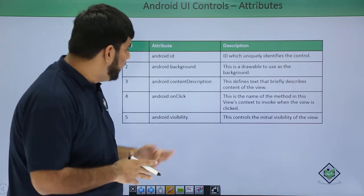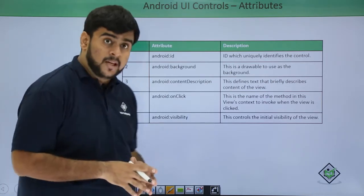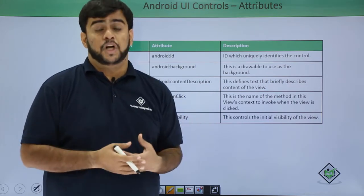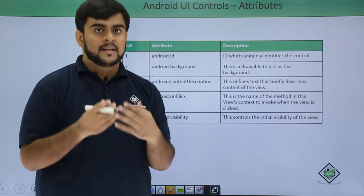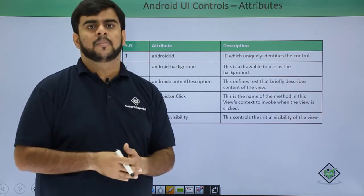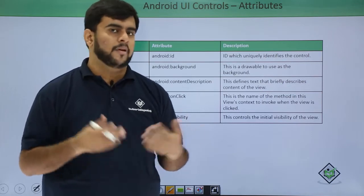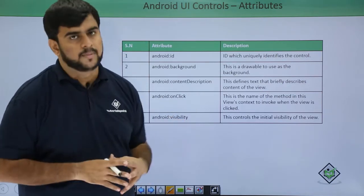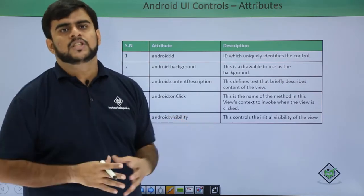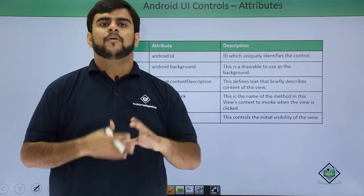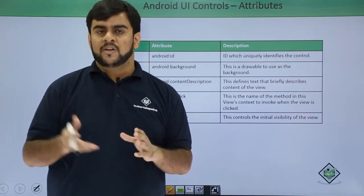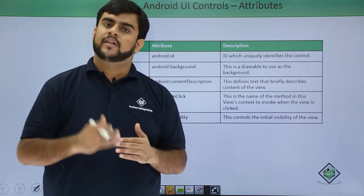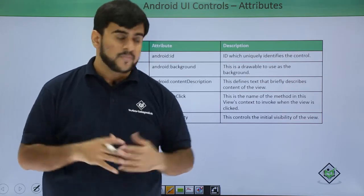Then after this, we have the visibility. By visibility, we mean what should be the visibility state of the view — is it visible, is it invisible, or it's gone. These can be the three states for the visibility. So these are some common attributes, and we would be going through all the UI controls and also covering their attributes that are available for them.